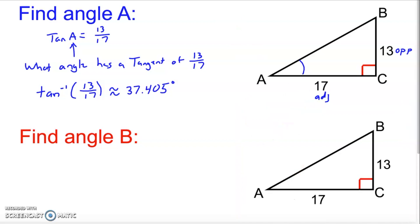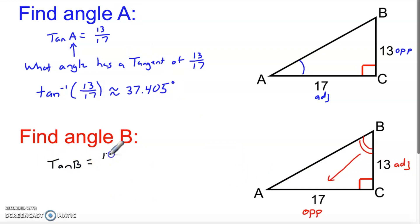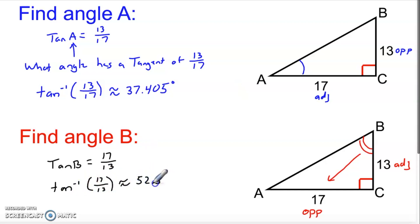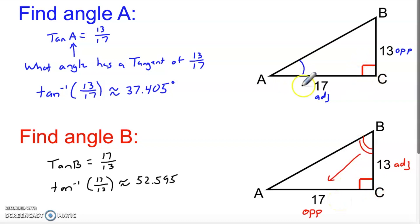In that same triangle, let's find angle B. The sides are always referenced to the angle — looking at angle B, the 17 is the opposite side and 13 is now the adjacent side. The tangent of angle B is 17 over 13, but what I want is the angle with that tangent. The inverse tangent of 17 over 13 is approximately 52.595 degrees. Notice that 53 and 37 add up to 90, which makes sense because angle A and angle B are in the same right triangle and the right angle accounts for the other 90 degrees.